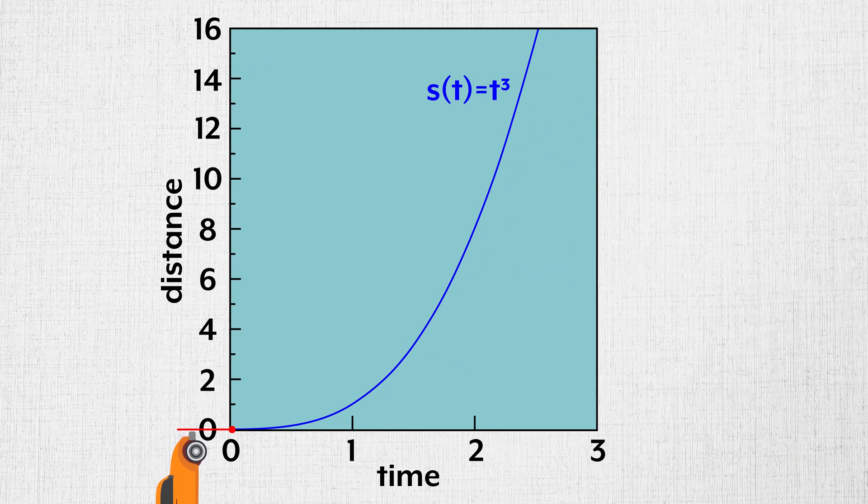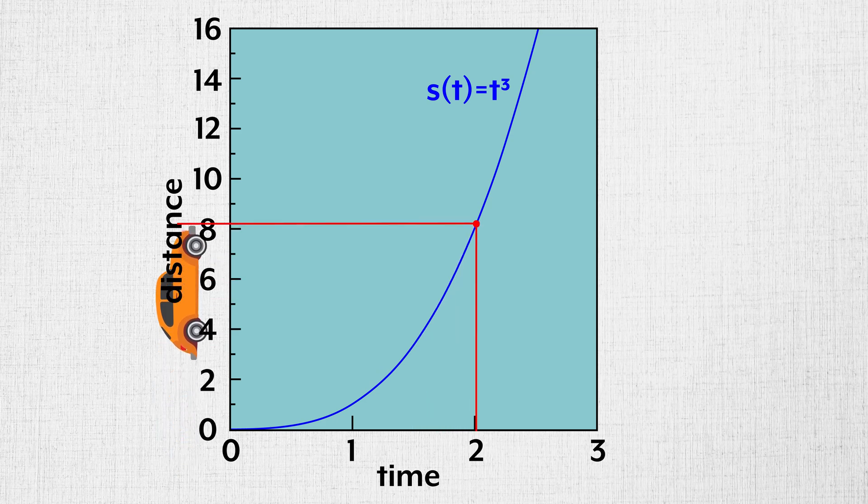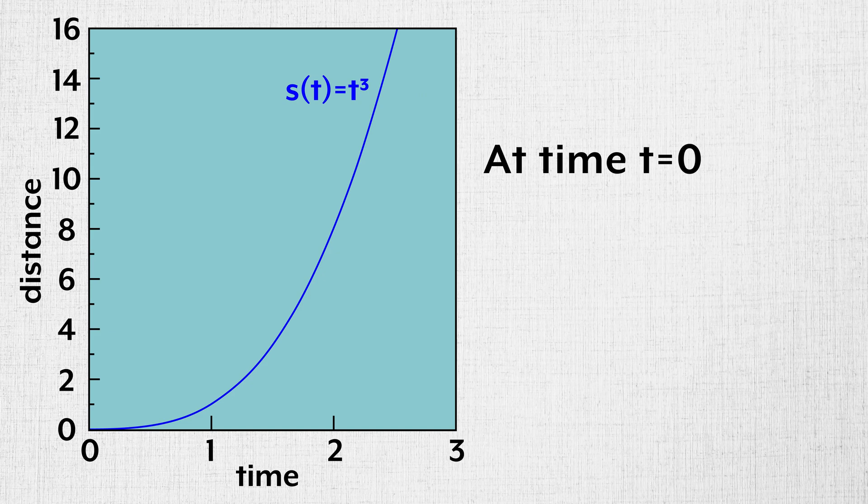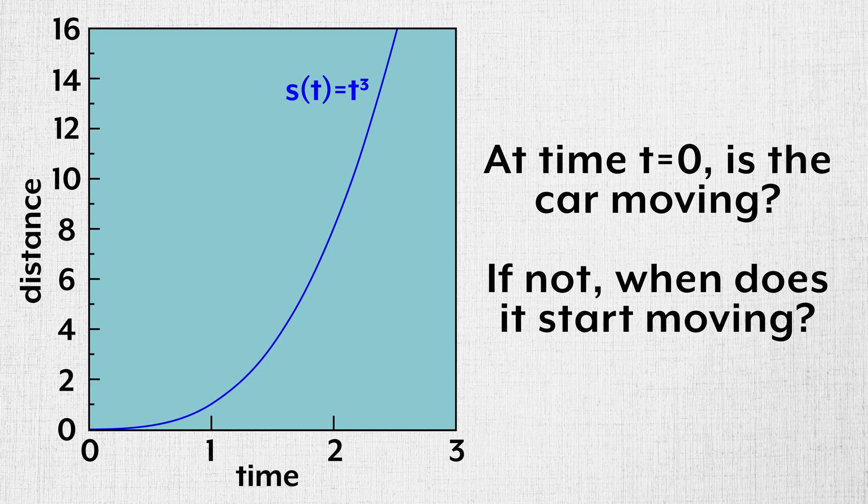But first, the paradox. This is a plot describing a car's journey, its distance traveled as a function of time. For brevity, I'm not going to mention units. The derivative of the function at time t equals zero is exactly zero. So at time t equals zero, is the car moving? And if not, when does it start moving?